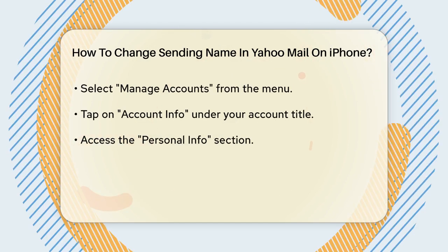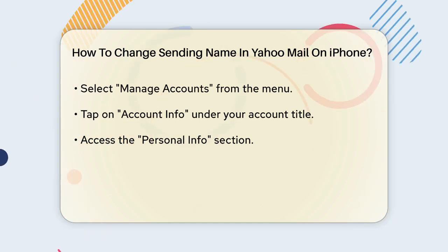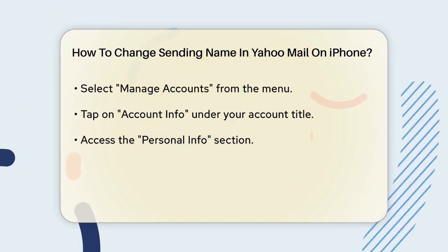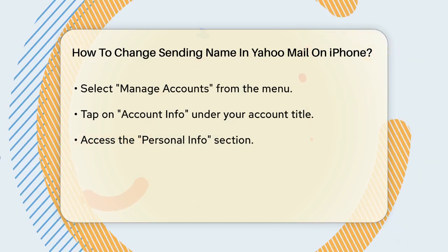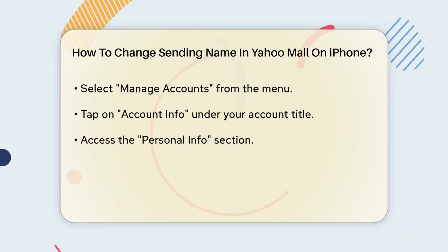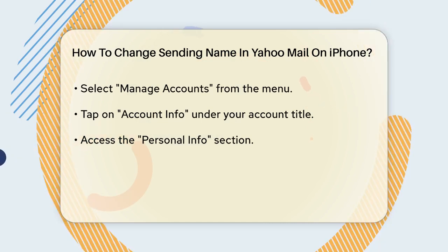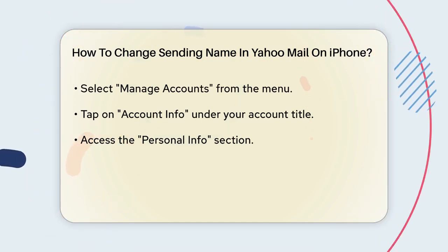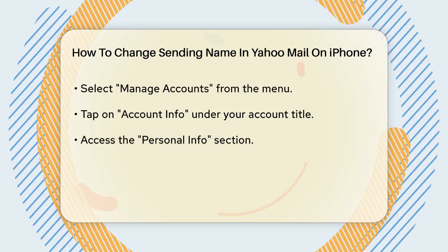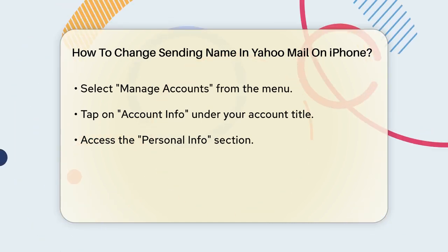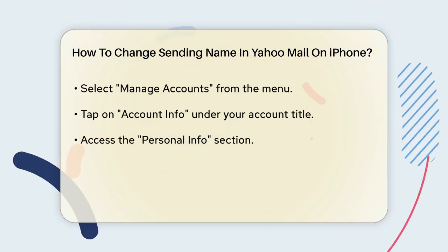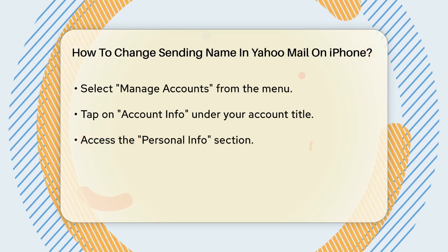This will take you to a new screen where you'll see Account Info under your account title. Tap on Account Info. In the Account Info menu, the first option you'll see is Personal Info. Tap on this to proceed.